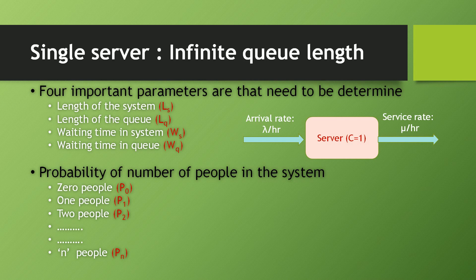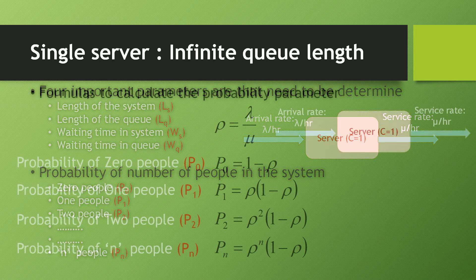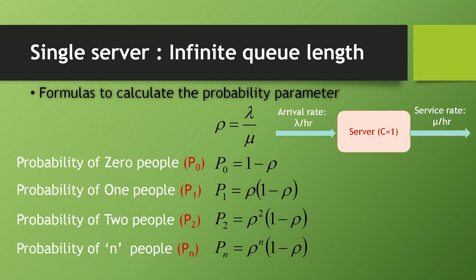We have to calculate all of these parameters using these formulas. First we will calculate the probability parameter. Rho is represented by the ratio of arrival rate to the service rate, that is lambda divided by mu. All values of probability will depend on the value of rho.